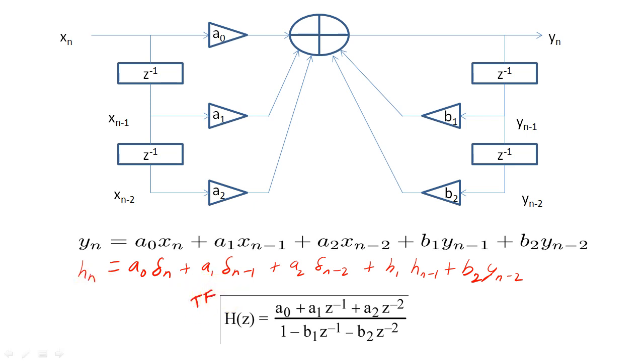We calculate h of z for four reasons. First, it allows us to find a compact expression for the impulse response quickly. Second, it enables us to create different filter structures that have the same transfer function.